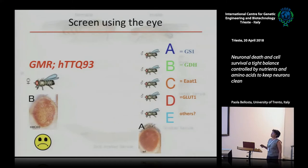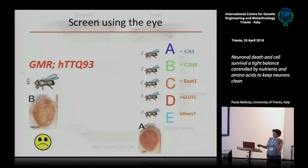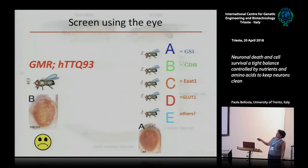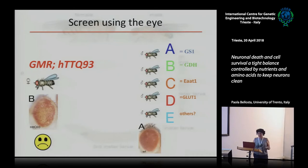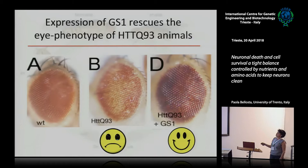We expressed mutated huntingtin in the retina, and the retina looks whitish because underneath it is degenerating. We also have sections showing the retina is actually full of holes. We then did a genetic interaction analysis, taking animals with different expression levels of enzymes controlling glutamate, to see if by any chance some of them rescued the phenotype. Luckily, we saw that overexpression of GS1 actually rescues the phenotype.